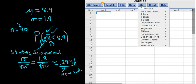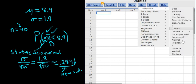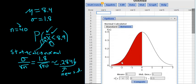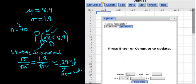So we go to stat, calculators, and then you go to normal. Then you left click on normal. The mean in this problem is 8.4. The mean does not change. The standard deviation does change, though. It's going to be 0.2846.